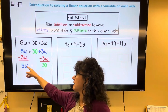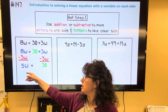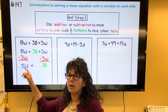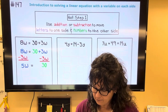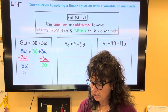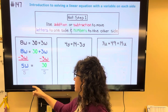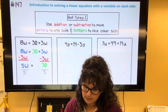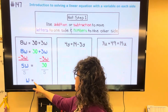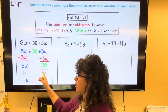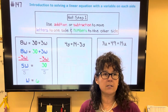Now we want to get w by itself. The opposite of multiplying by 5 is to divide by 5. What I do to one side, I do to the other. So w is by itself — bring down the equal sign — and 30 divided by 5 is 6.